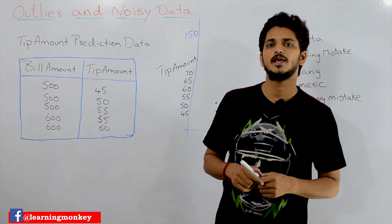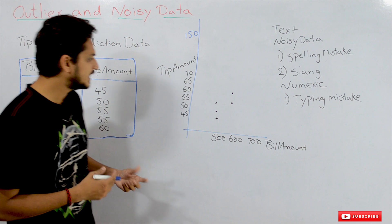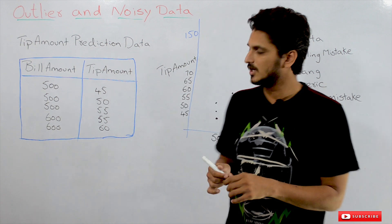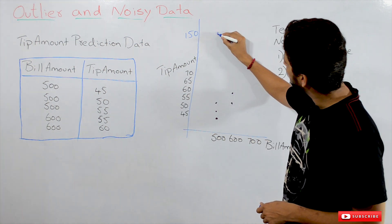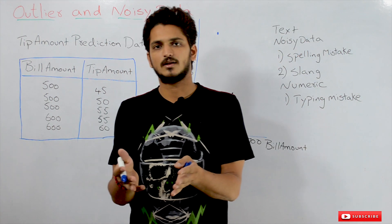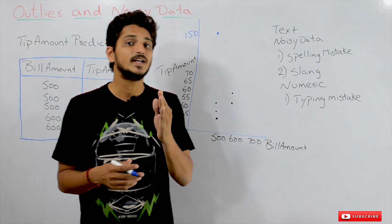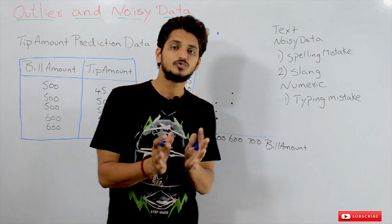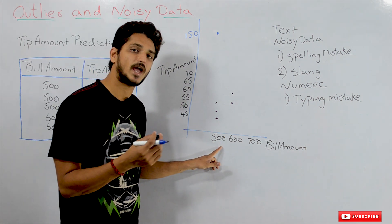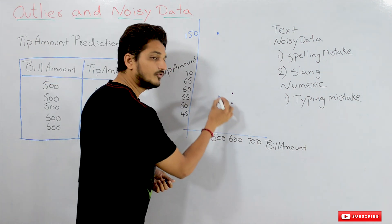So what is an outlying point? Suppose a customer comes into the restaurant and makes a bill amount of 500, but gives a tip amount of 150. That point appears far from the rest. Maybe the customer liked the service person, was in a good mood, or is a rich person — whatever the reasons. But usually at 500, 99.9% of customers give a tip amount around 45 to 55.